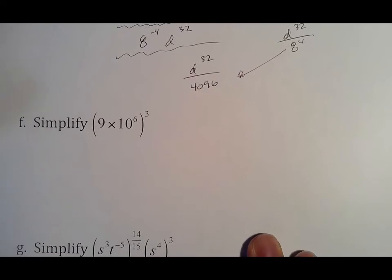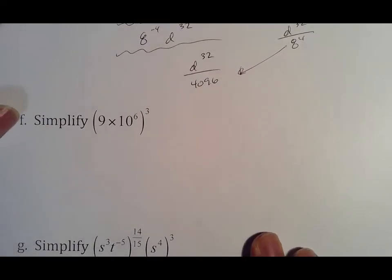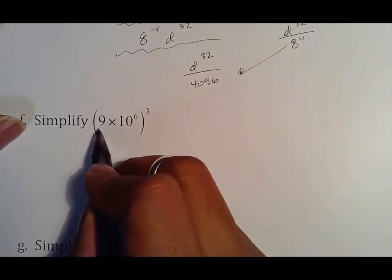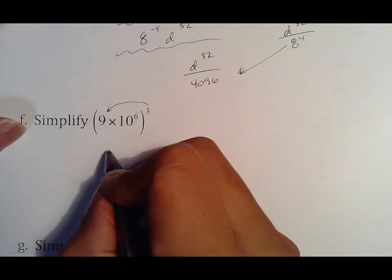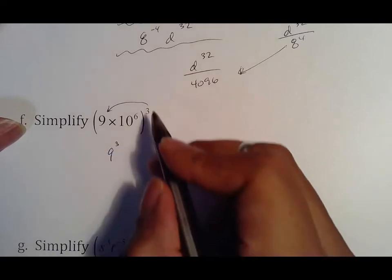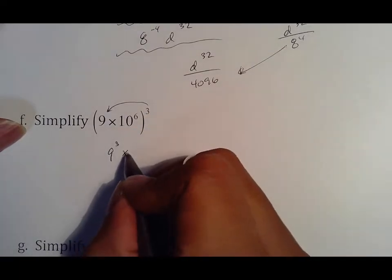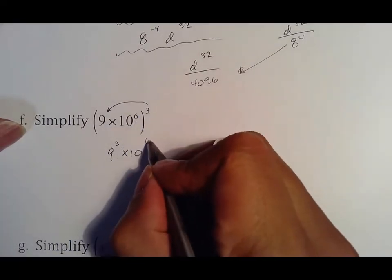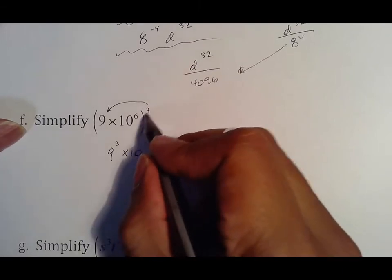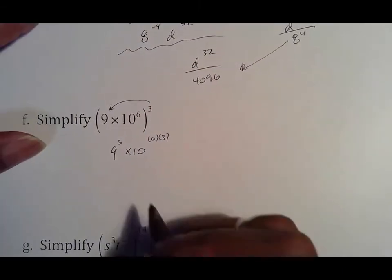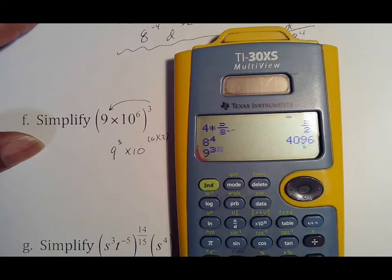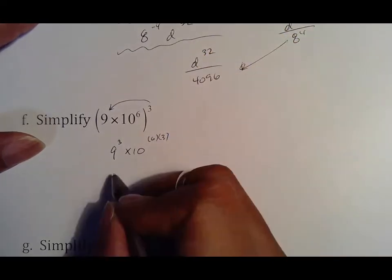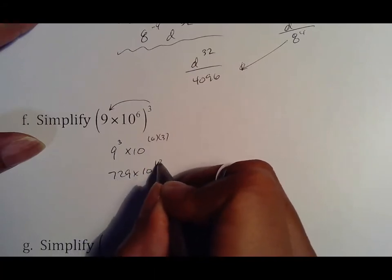What happens if I see this? Well we saw this before. That is my number, my coefficient, and that is my base to a power. So what I'm going to do is turn this into 9 to the 3rd times 10 to the 6 times 3, because I only multiply the exponent.